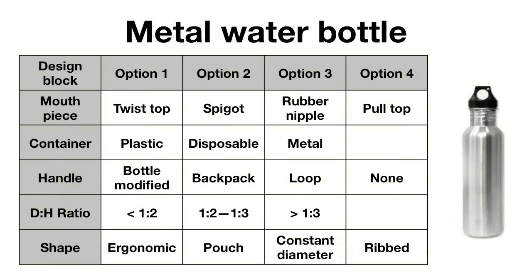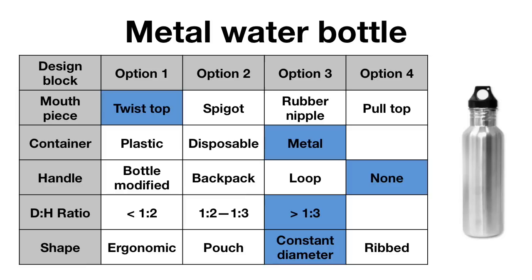In most cases, when constructing a solution using a morph chart, we selected one option for each row. However, there are a few exceptions. Sometimes we skip a line, which is the same as putting none. For the design block of handle, none was an option, and it was selected for the metal water bottle and some others.